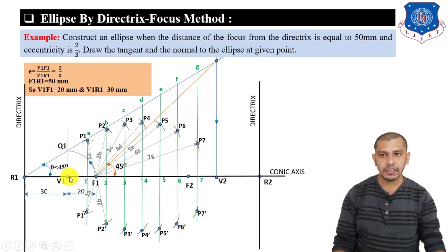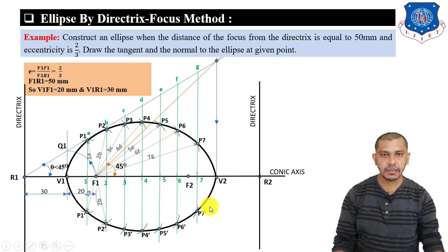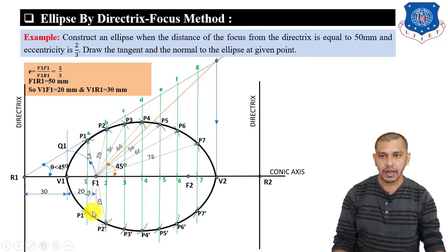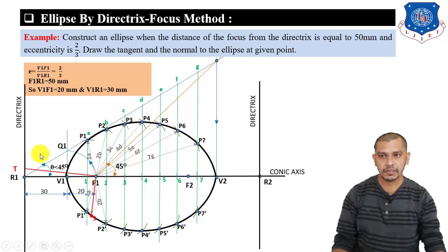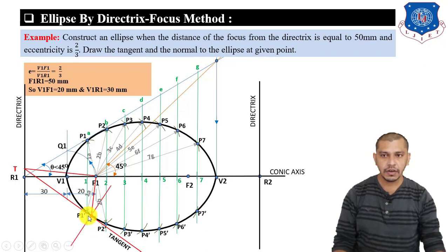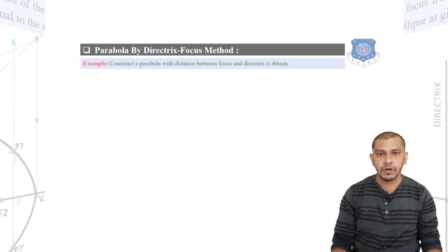Now connect all these points with a freehand curve to get the ellipse using the directrix and focus method. To draw the tangent and normal at a given point S on the curve: connect S to focus F1, then draw a line perpendicular to SF1 from F1 in the direction of the directrix. The intersection point is T. The line joining T to S is the tangent, and a line perpendicular to the tangent from S is the normal.